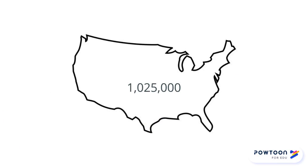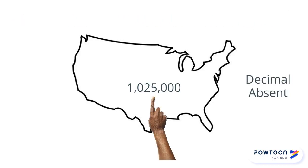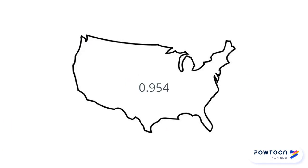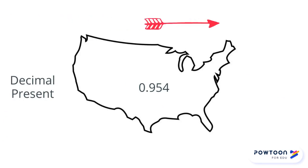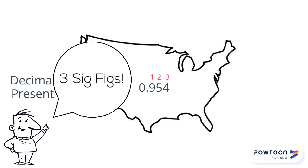1,025,000 — decimal absent, start on the Atlantic, right, go to the left. Since the first three are zero, we don't count until the five. Then we count all the rest — four sig figs. 0.954 — decimal present, start on the Pacific, left side, go to the right. Start at the first non-zero number and count all the rest for a total of three sig figs.